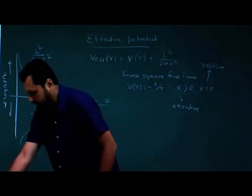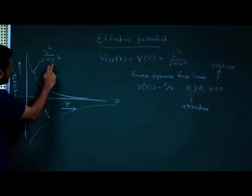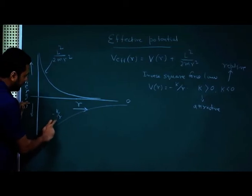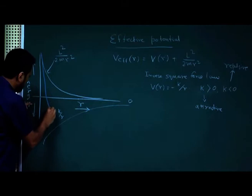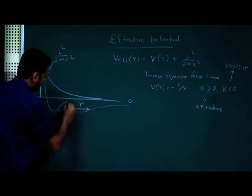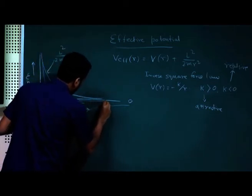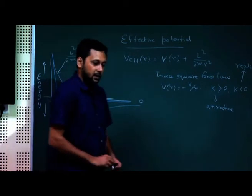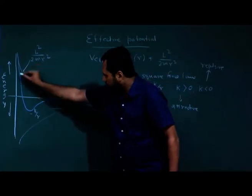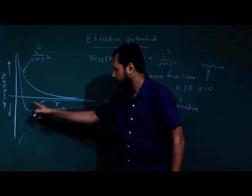If we draw the effective potential, for lower R values it follows the centrifugal term, and for higher R values it follows the −K/R term. The overall effective potential — drawn in blue — has a minimum at a certain value of R. We can find that minimum by taking dV_effective/dR and setting it equal to zero.